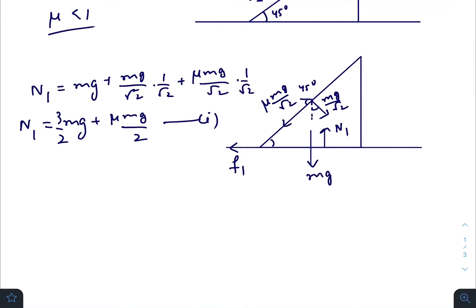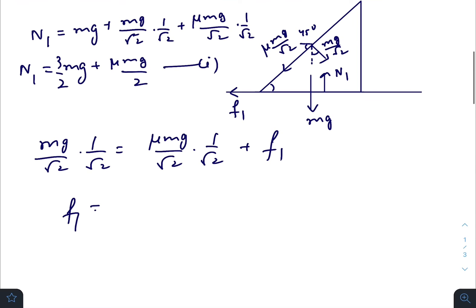Forces towards the right is mg/√2 sin 45 due to this one, and towards the left is μ mg/√2 sin 45 and the friction itself. So friction is mg/2 minus μ mg/2.